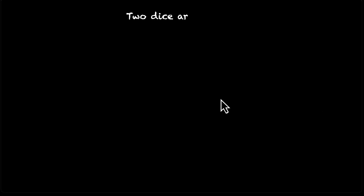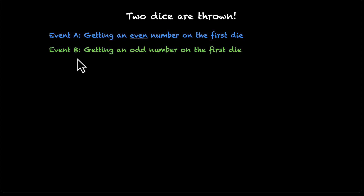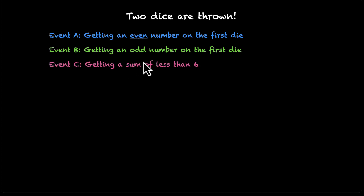Let's say we roll two dice and we have three events. Event A is getting an even number on the first die, event B is getting an odd number on the first die, and event C is getting a sum of less than six. I'm going to give you a few statements and you are going to tell me whether those statements are true or false.